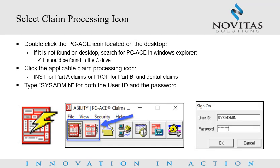The PCACE icon, shown here with the lightning bolt, can be opened from the provider's desktop. If the icon is not found on the desktop, the provider may have to search for PCACE in Windows Explorer, where it can be found on the C drive. Once the icon is found and opened, from the PCACE toolbar the provider clicks on the applicable claims processing icon, either INST for Part A or PROF for Part B and Dental.